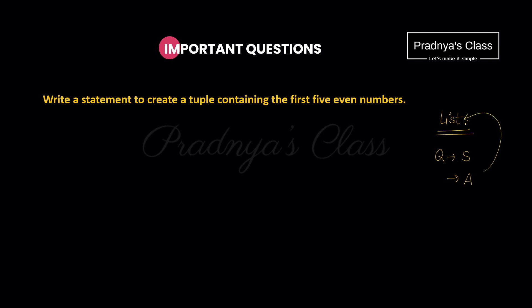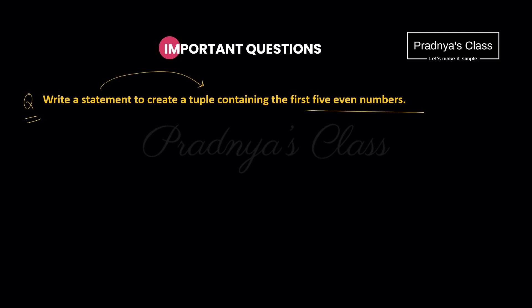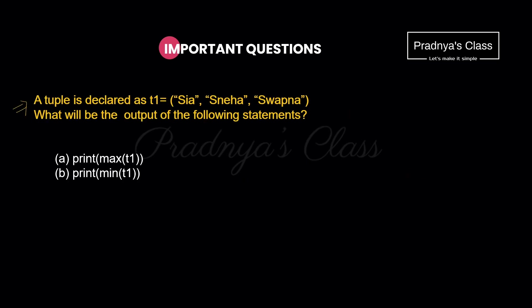Next question: write a statement to create a tuple containing the first five even numbers. Give the tuple a meaningful name, such as 'tuple_of_even_numbers'. Enclose the elements in round brackets separated by comma: (2, 4, 6, 8, 10).